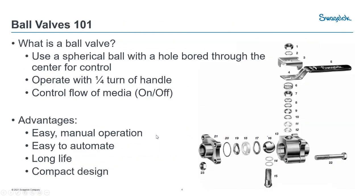We'll start with Ball Valve 101. On the right we have an exploded view of one of our 60 series ball valves. A ball valve uses a spherical ball with a hole bored through the center for on-off control of your media — basically just turning things on and off. That ball, numbered 16, turns side to side to open and close the flow path. It's a quarter turn, as opposed to a needle or gate valve which requires multiple turns to get full open. You can have fast on and off by just hitting the handle and doing a quick quarter turn.